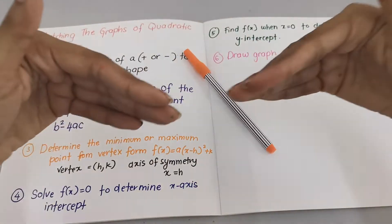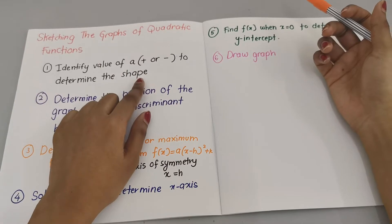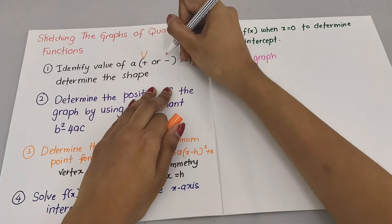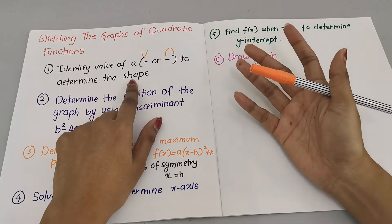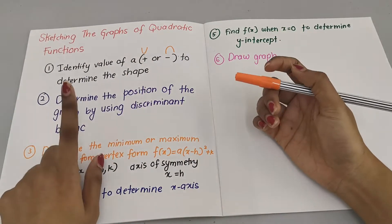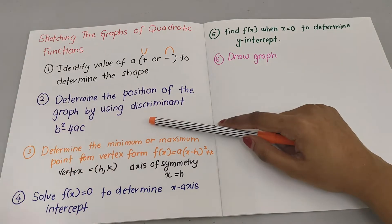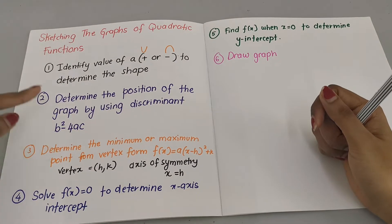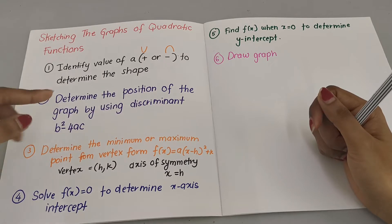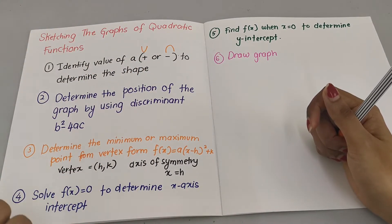The first step when you want to sketch the graph is to determine the shape — you need to know whether it's a smiling face or a sad face graph. If you identify the value of a and it's positive, it will be a smiling graph; if it's negative, it will be a sad graph. After that, the second step is to determine the position of the graph. I've done another YouTube video where you can determine the position using the discriminant — I'll add a card so you can click and be directed there. This is very important because without knowing the position, you won't know whether the graph is above, below, or to the side of the x-axis.